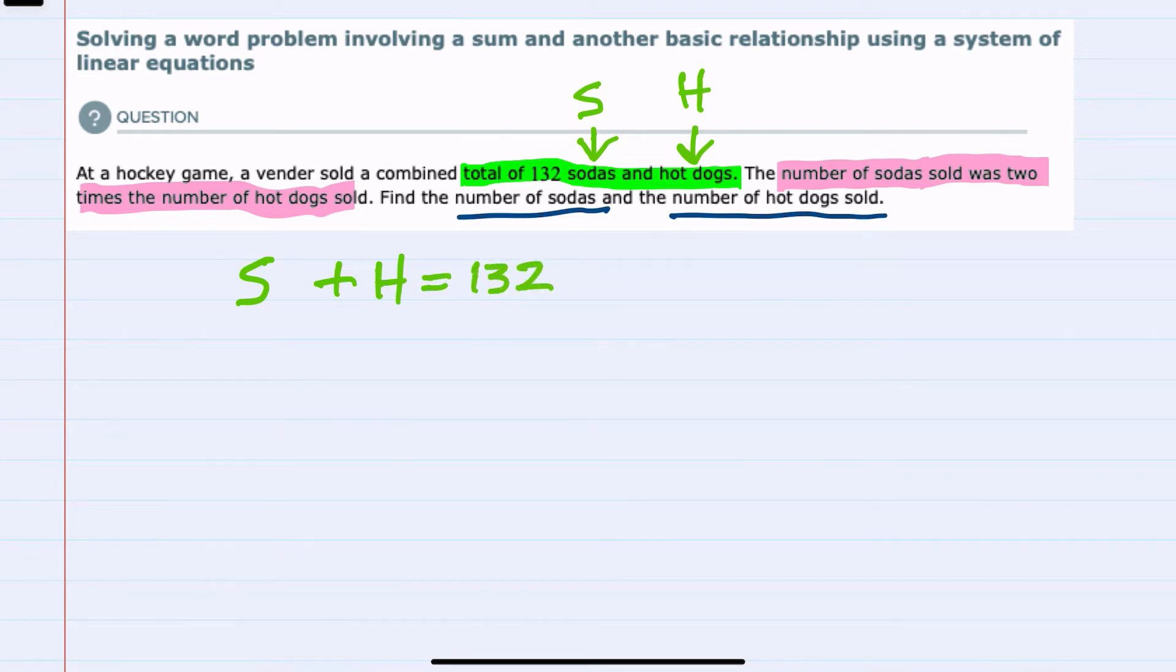Then from the second sentence, it says the number of sodas sold, S, was two times the number of hot dogs. So sodas equals two times hot dogs. And this now gives us a system of equations.